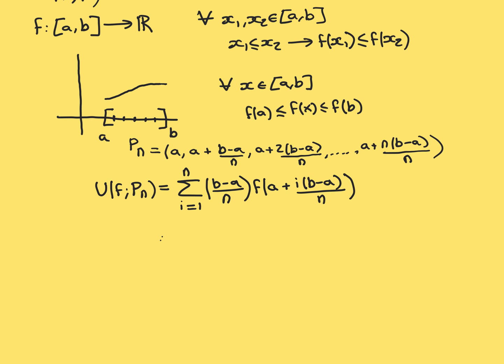We're going to sum from i equal to one to whatever N is — the sum over all of these subintervals. You want the length of each subinterval, which is (b−a)/N. And then you want to multiply by the supremum of the value of the function over each of the subintervals.